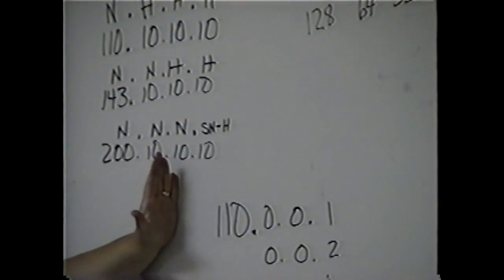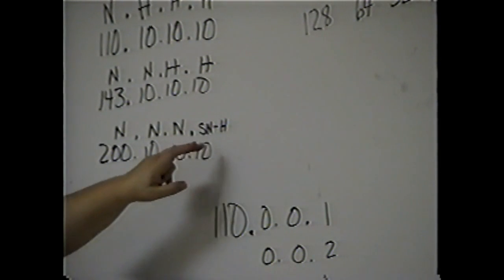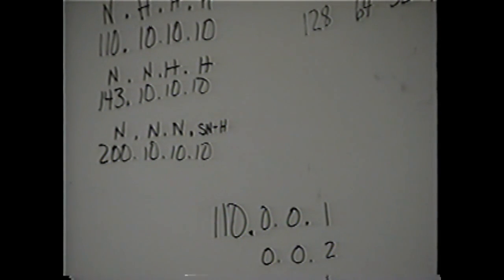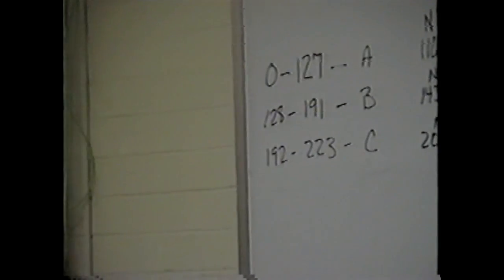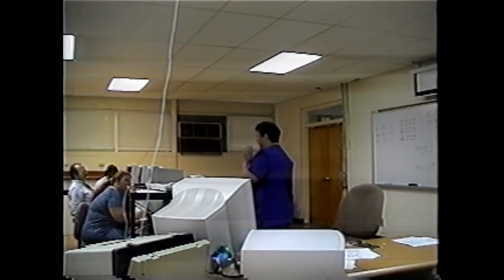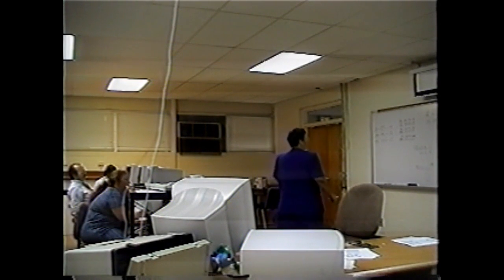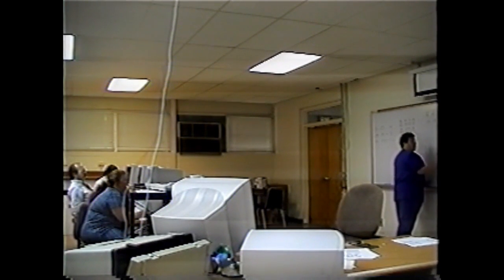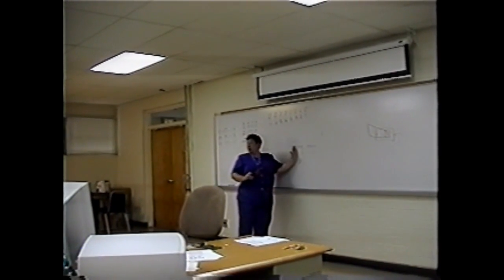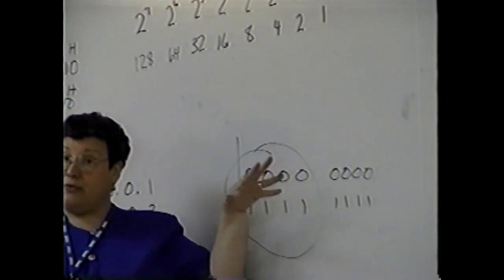So you'll have network, network, network, subnet, and then host. I'm going to borrow bits from the host — always the leftmost of the eight bits. I'll always start borrowing from the left, using those for subnets, and everything else will be for the host.